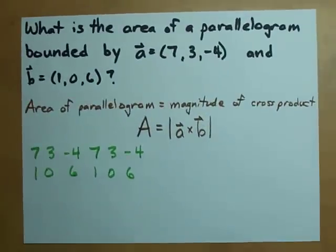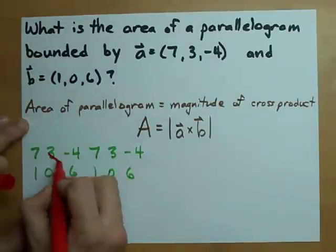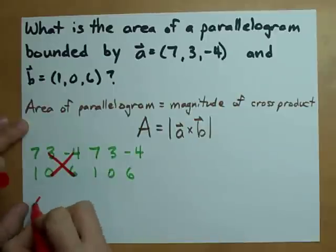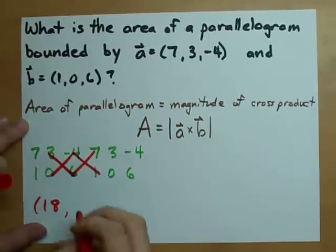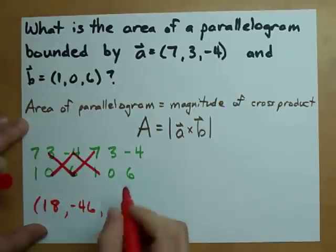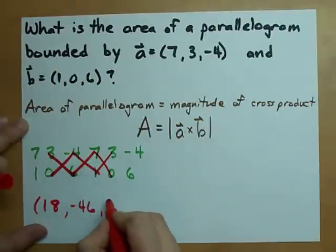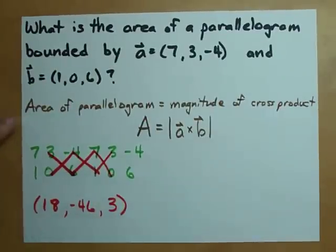Then, to find the actual cross product: 18 minus 0, negative 4 minus 42, 3 minus 0. Sweet. So, there's my cross product.